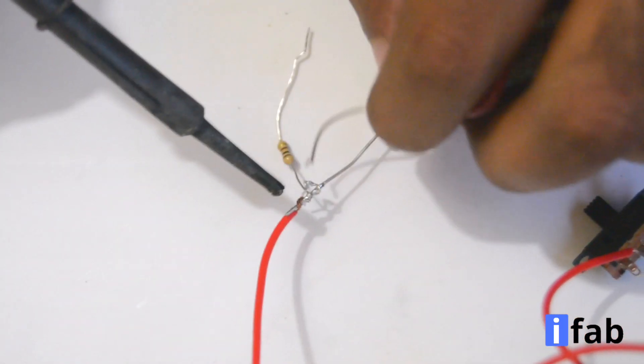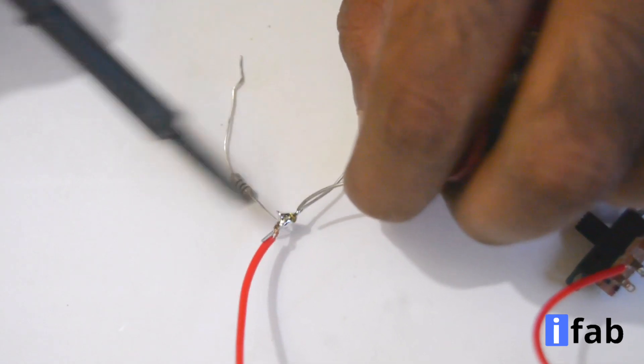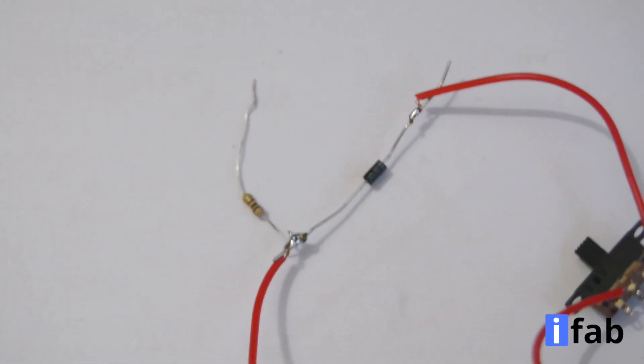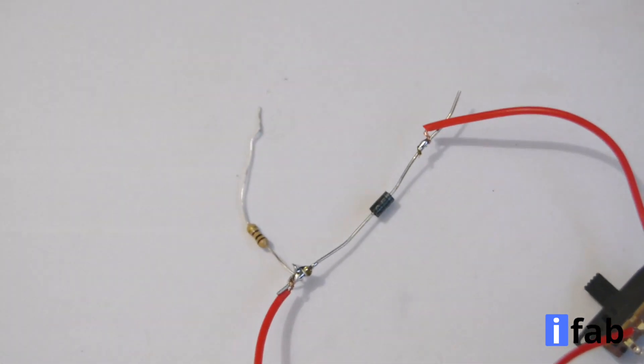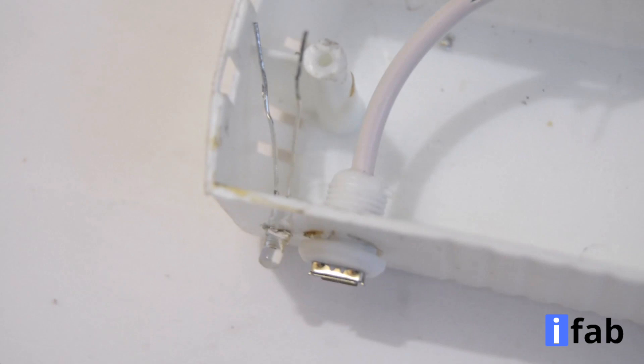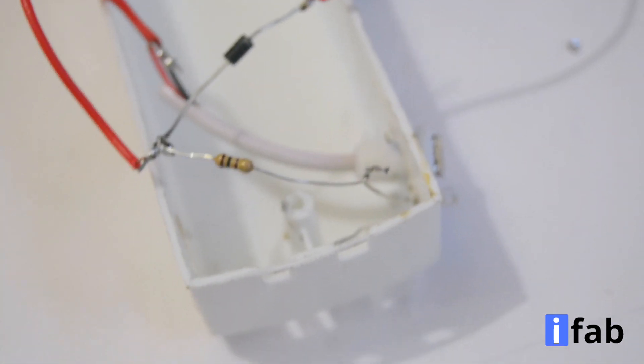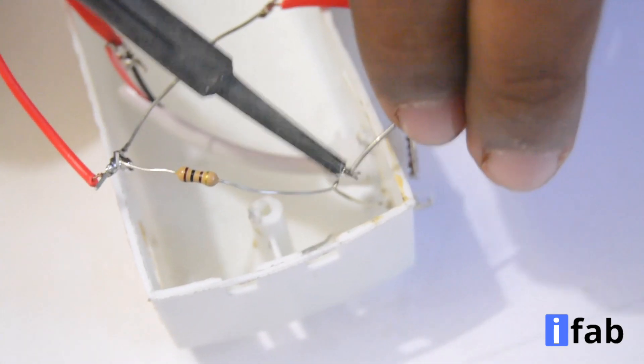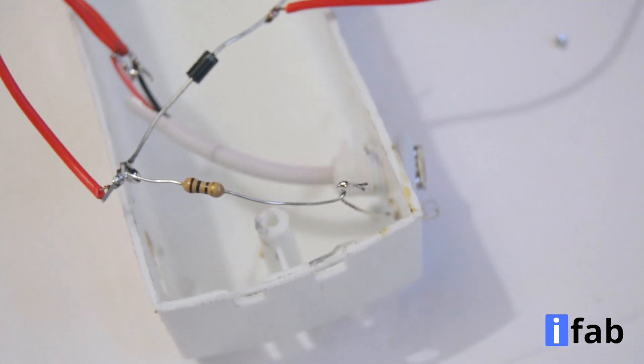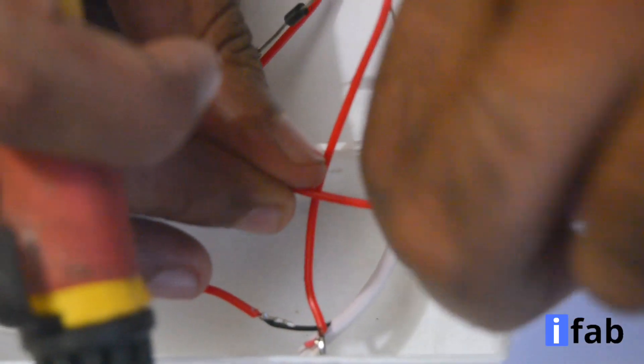Connect the 100 ohm resistor to the positive terminal of the USB port. Place the LED over the holes. And now connect the positive terminal of the LED to the 100 ohm resistor. Connect the negative terminal of the LED to the negative terminal of the battery.